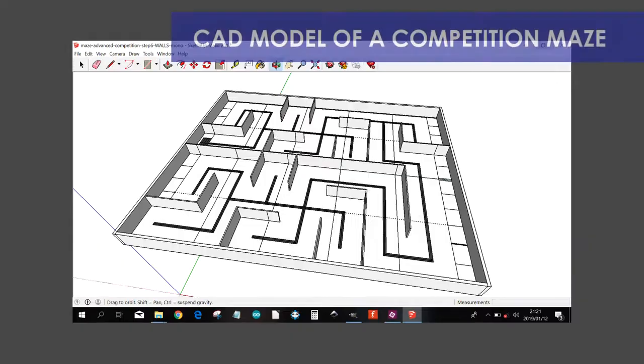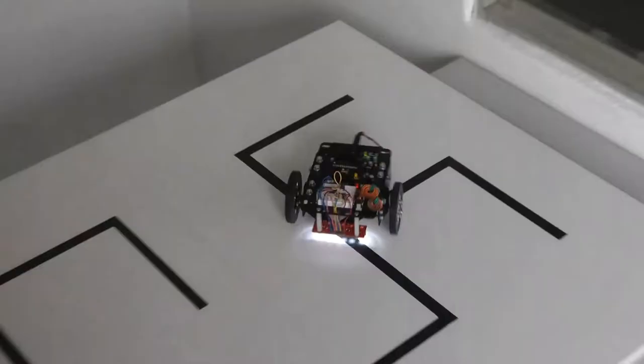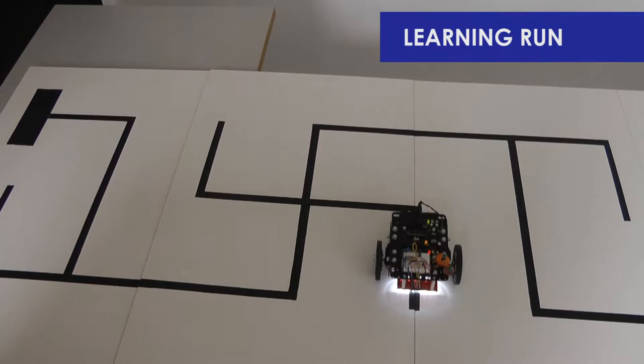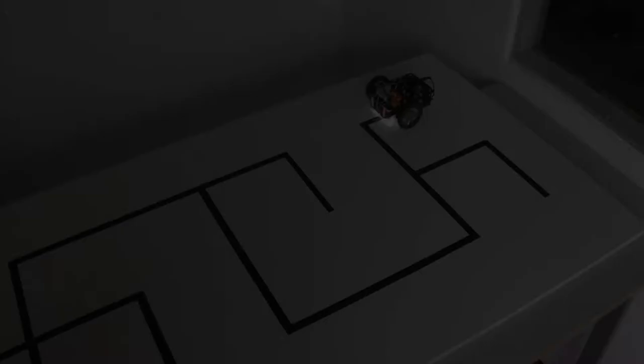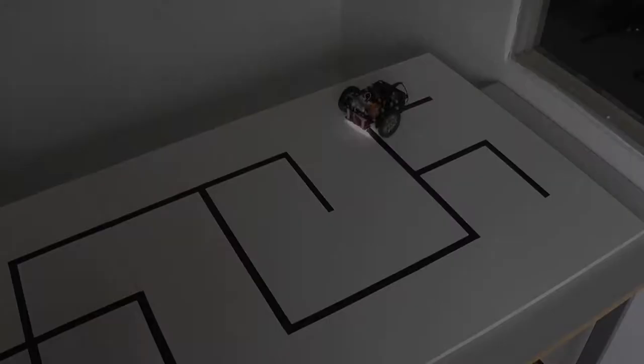Effectively, the robot runs through the maze twice. The first run is a learning run. The second run demonstrates an optimized solution.